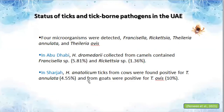In the tick-borne pathogen study, we detected four microorganisms. In Abu Dhabi, Hyalomma dromedarii collected from camels contained Francisella species at 5.8%, 81%, and 2.36%. In Sharjah, Hyalomma dromedarii collected from cows were found positive for Theileria annulata, and goats were positive for Theileria ovis. We detected Theileria ovis from the UAE for the first time.